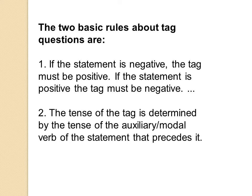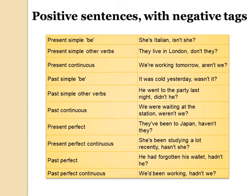The second basic rule is that the tense of the tag is determined by the tense of the auxiliary or modal verb of the statement that precedes it. Now, for your information, I have shared a chart where the positive sentence changes with negative tags, given according to the different tenses. You can go through the examples.